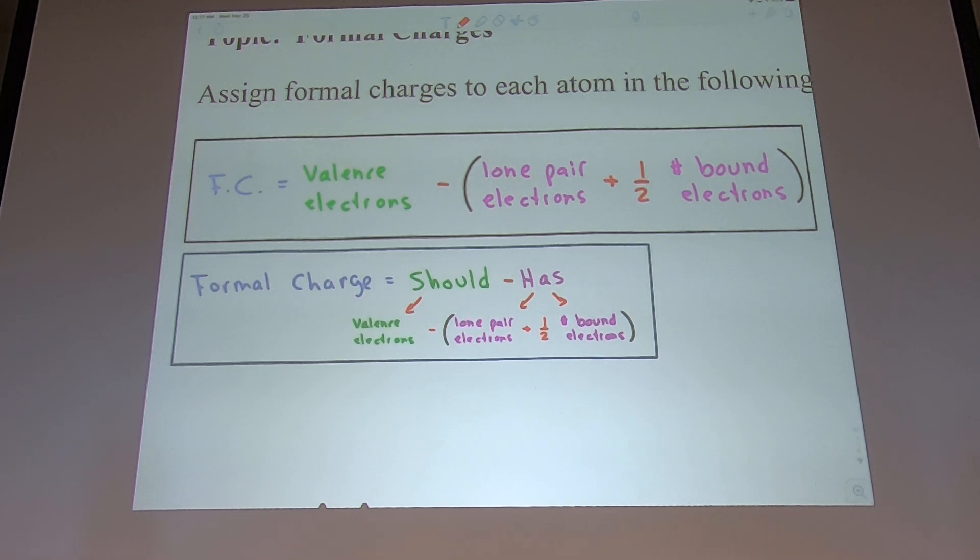The way I emphasized last class, formal charges is what you should have as a neutral atom and how many electrons do you have. You subtract those out, and that will give you good practice.